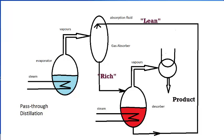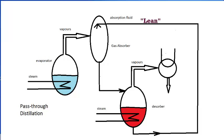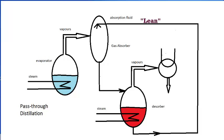Instead of being condensed directly, those vapors were passed through an intermediate fluid, the absorption fluid, before they were condensed. And hence the term pass-through distillation.